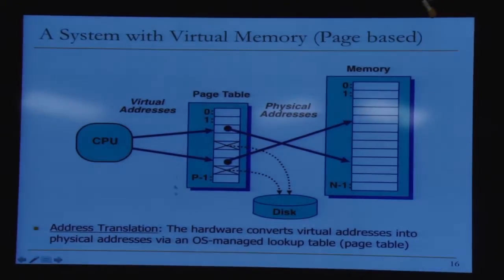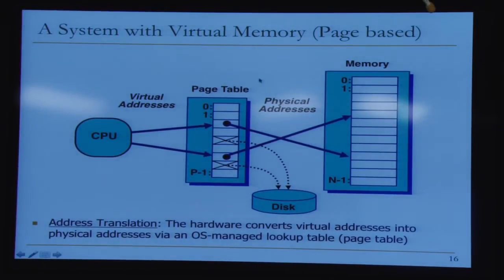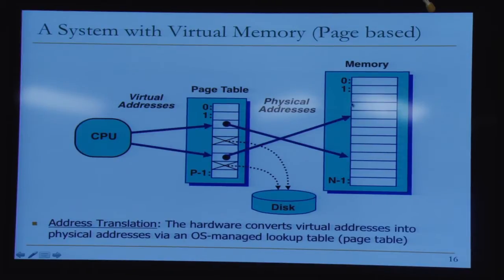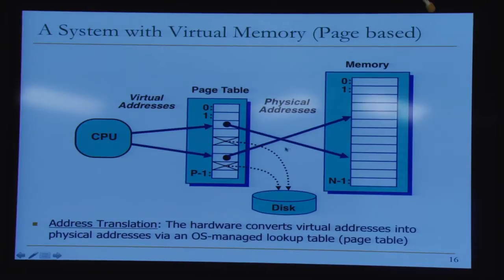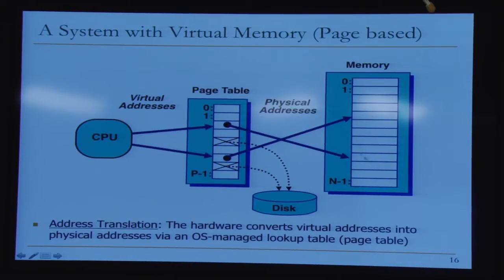Pictorially: you generate virtual addresses; an indirection table called the page table maps those virtual addresses to physical addresses. Because physical memory is smaller than the virtual address space, some virtual addresses may map to disk. Hardware converts virtual addresses to physical addresses via an OS-managed lookup table — the page table. Physical memory is really a cache for disk: persistent data lives on disk, and when you need to work on pieces of data, you bring them into physical memory.